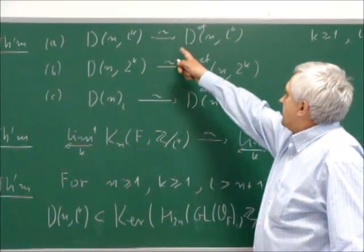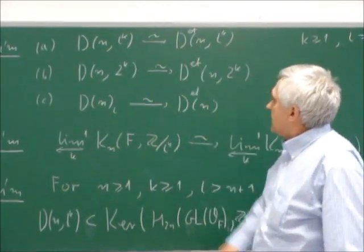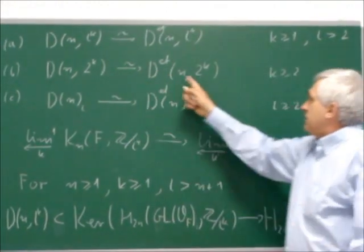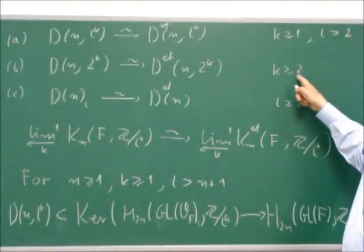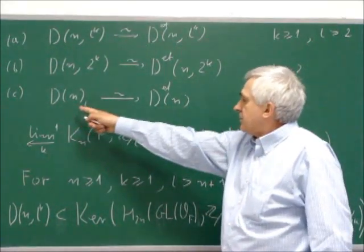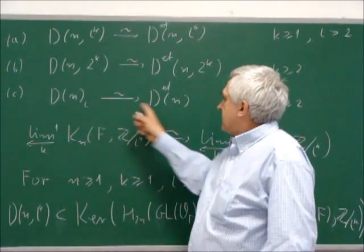D(n,L,K) is isomorphic to D(n,L,K) étale for L bigger than 2, similarly for prime number 2, but K is greater than 2. And divisible elements in K-theory of the global field are just the same as étale.